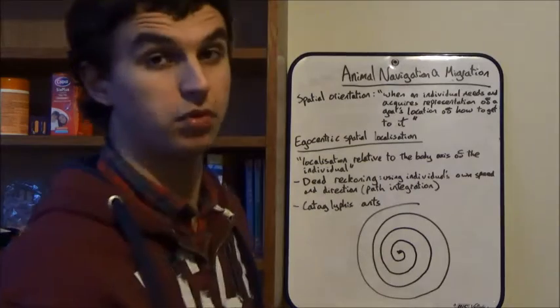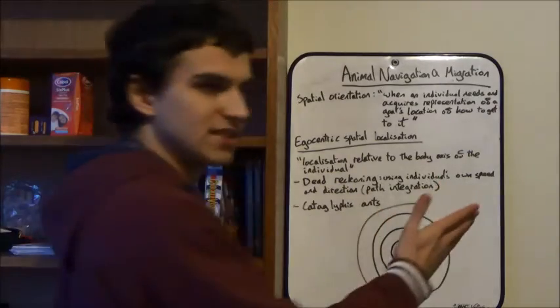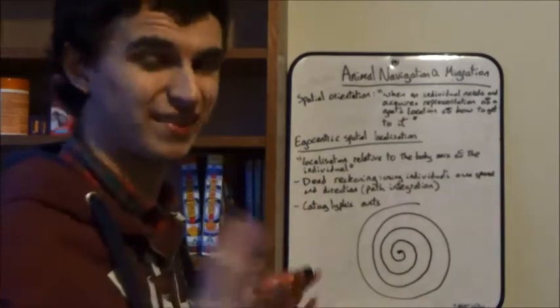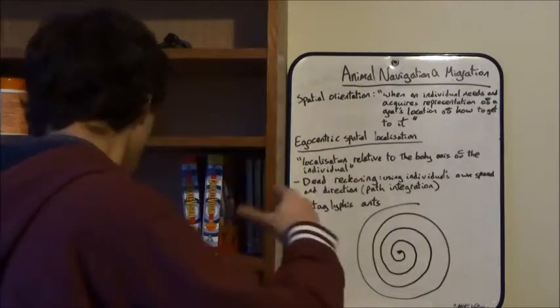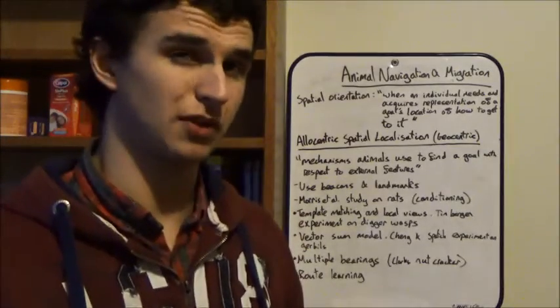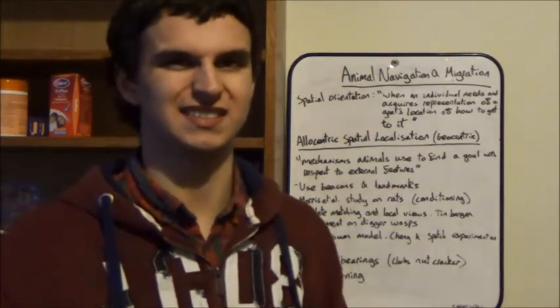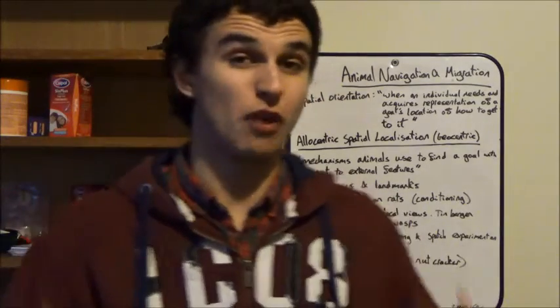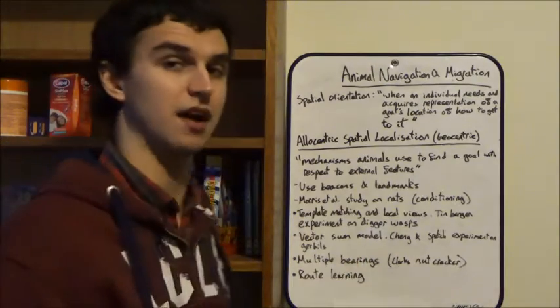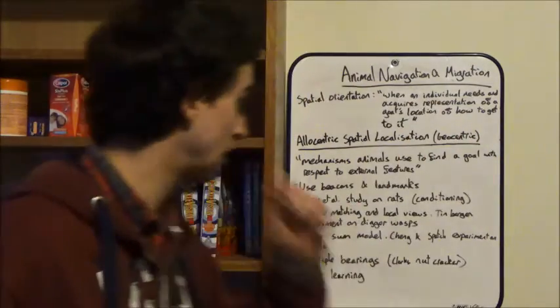Now, there are some problems to egocentric spatial localization in this way because if you make an error at some point, then it doesn't account for that. Then you're buggered, basically. You make one error, and you're buggered. So, it doesn't compensate for any off-course displacement, right? Now, egocentric spatial localization is very good for animals which aren't going to travel very far. If you're going to be travelling long distances, then doing all this stuff relative to your own body axis gets a bit complicated. So, it's a bit more difficult.